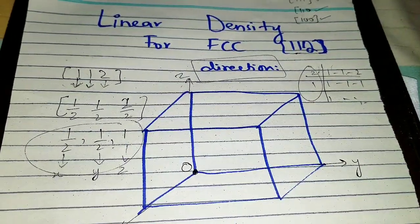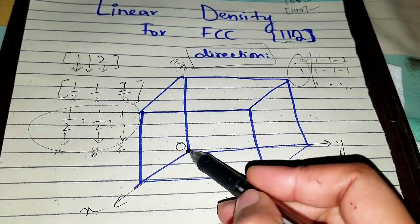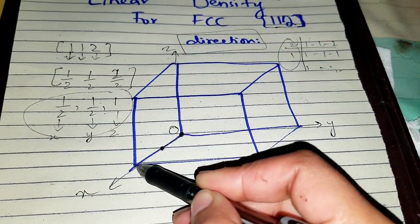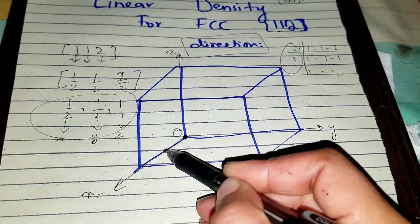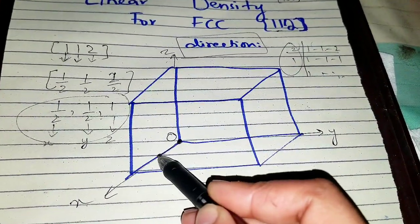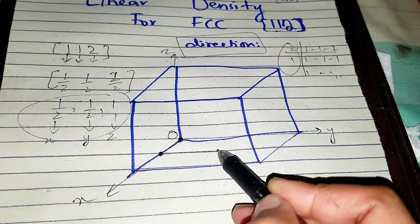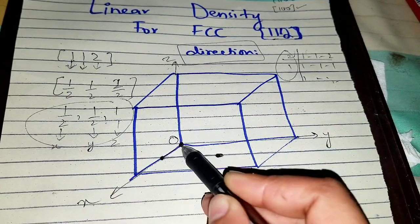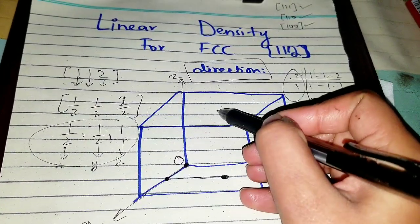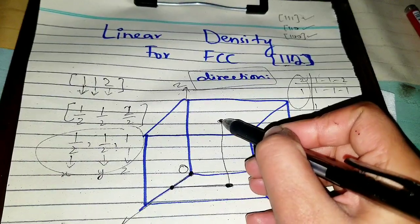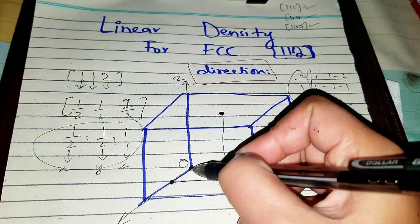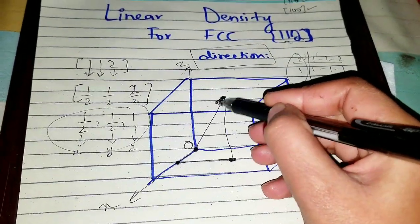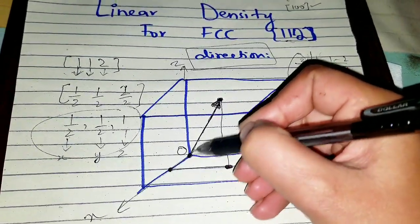From the origin, we move half a unit along the x-axis, then half a unit along the y-axis from that point, and then one full unit along the z-axis — which brings us to the upper face of the unit cell. You draw a vector from the origin to this final destination point, and this is the [112] direction. This is the final vector whose linear density we will be finding.